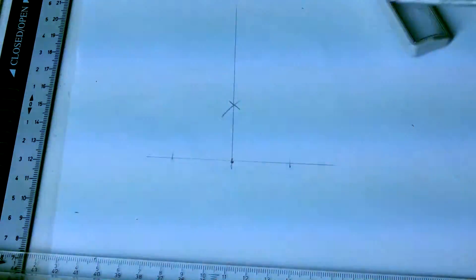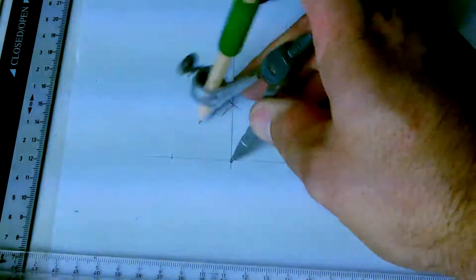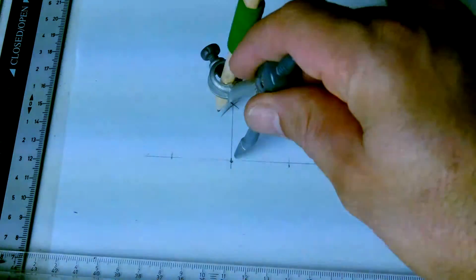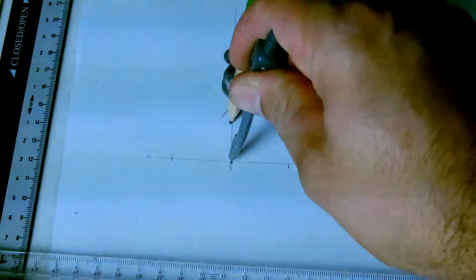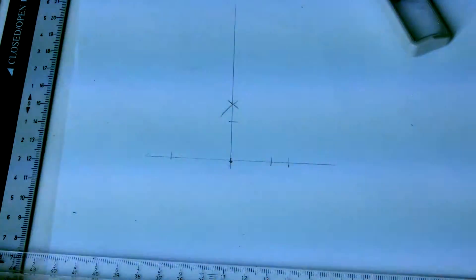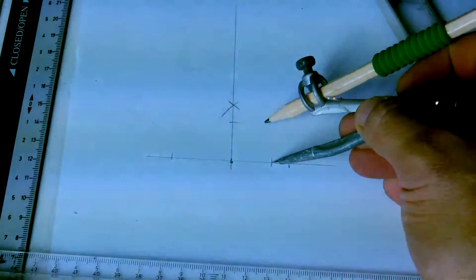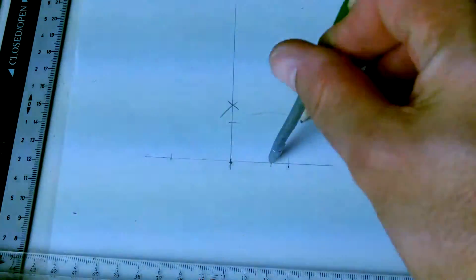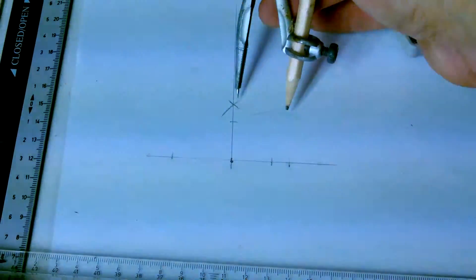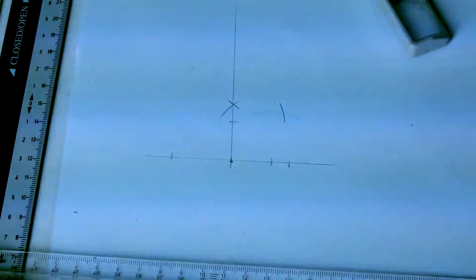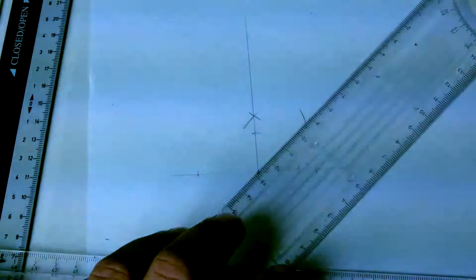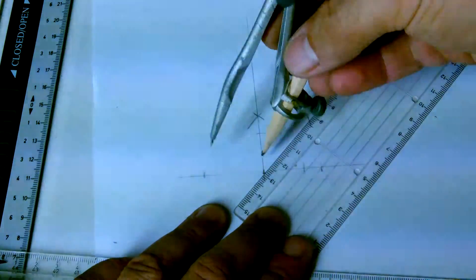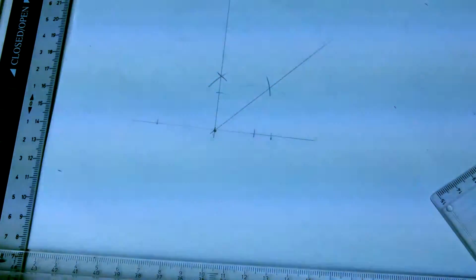If you want to bisect the angle, again open the compass as much as you like and mark over there and over there. Open it as much as you like, mark somewhere in the middle, and this intersects. This gives you a 45 degree angle. So I've constructed a 90 degree angle and 45 degree angle using only the compasses.